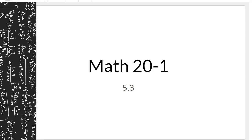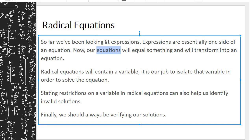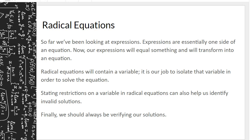We'll be looking at chapter 5.3 radical equations. We've been looking at expressions — essentially one side of an equation. Now our expressions will equal something and transform into an equation. Radical equations contain a variable, and it is our job to isolate that variable in order to solve the equation. Stating restrictions on a variable can also help us identify invalid solutions.